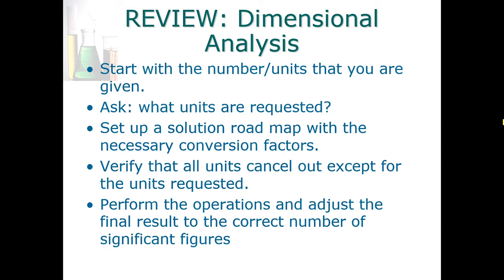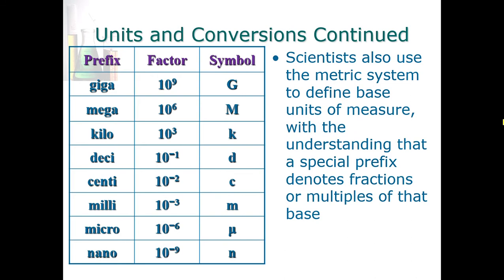Scientists use the metric system to define the basic units of measure like distance, mass, and volume. The way the metric system works is you define a base unit and then work with ranges in powers of 10 using prefixes with corresponding factors and symbols. You're going to have to memorize this set. You don't have to remember how many feet are in a meter or how many pounds are in a kilogram — you don't need conversions between systems — but within the metric system you are going to have to memorize these prefixes, their factor multipliers, and the symbol for each.